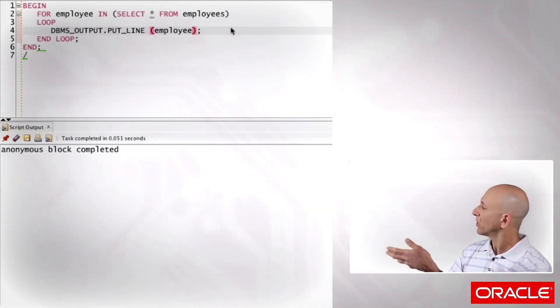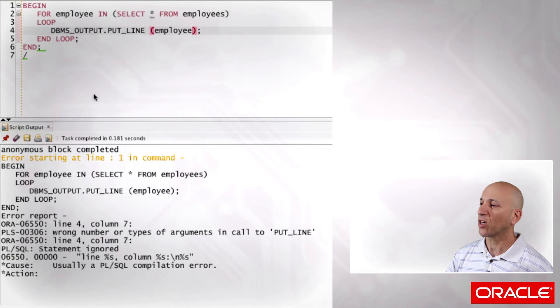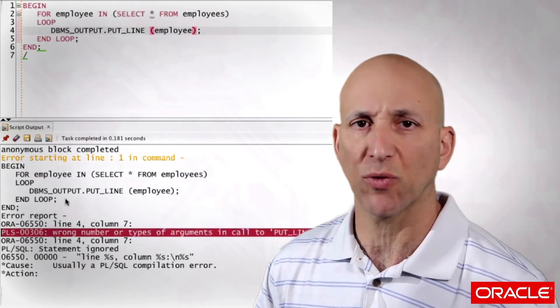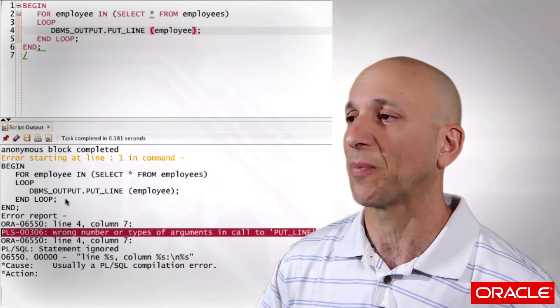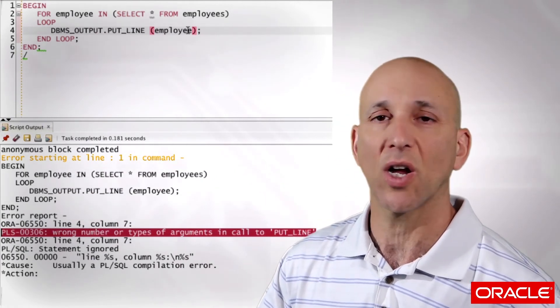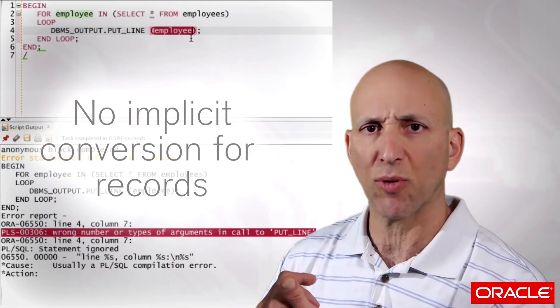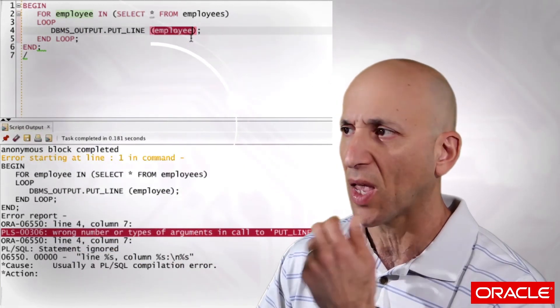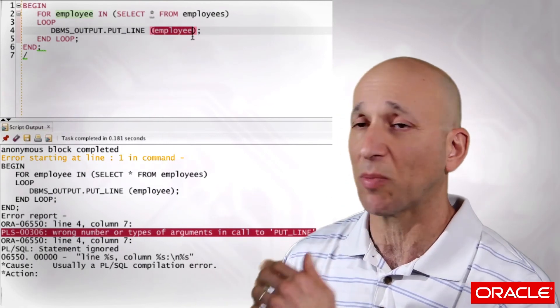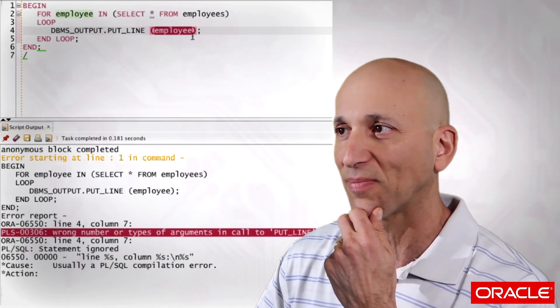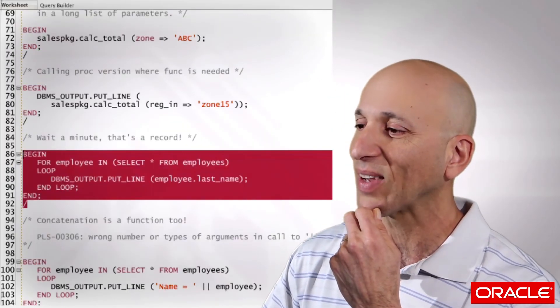But what sometimes happens is something more like this. Display my employee. For each employee, just display it. It seems so reasonable. Run my code. Wrong number of types of arguments and call it a put line. Well, put line only accepts strings or anything that can be implicitly converted to a string. And there's no way Oracle can convert a record to a string. So again, in simple code, it should stand out pretty clearly that you missed something here. But in more complicated code, especially depending on the way you name things, it can be hard to get focused on what could be causing that problem.